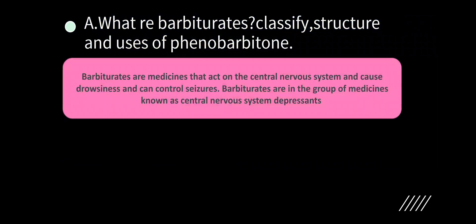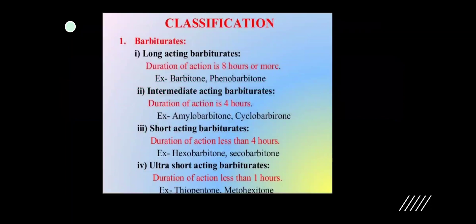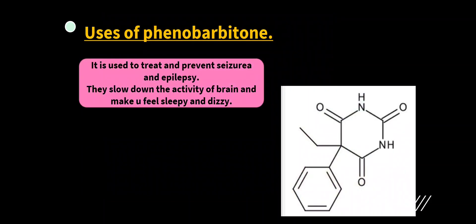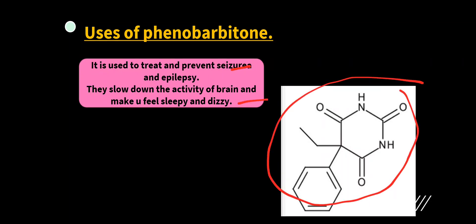What are barbiturates? Classify, and give the structure and uses of phenobarbitone. Barbiturates are medicines that act on the central nervous system, causing drowsiness and controlling seizures — they are CNS depressants. Classification: long-acting (phenobarbitone), intermediate-acting (cyclobarbitone), short-acting (hexobarbitone), and ultra-short-acting (methohexitone). Uses of phenobarbitone: it is used to prevent seizures and epilepsy, and slows down brain activity making you feel sleepy and dizzy.